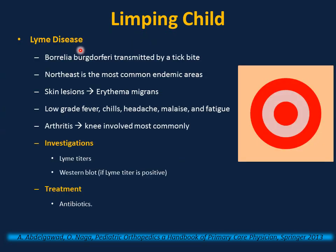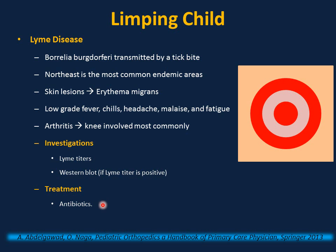Lyme disease can cause limping in children. It is caused by Borrelia burgdorferi and transmitted by a tick bite. The Northeast is the most common endemic area. The earliest manifestation is a target lesion or erythema migrans. If a child presents with erythema migrans, living in an endemic area with a history of tick bite or tick exposure, treat immediately with no delay and no investigations needed. Constitutional symptoms include low-grade fever, chills, headache, malaise, and fatigue or flu-like symptoms. Other manifestations include Bell's palsy, carditis, meningitis, and arthritis. If the diagnosis is not clear, order Lyme titers; if positive, confirm with Western blot. Treatment: antibiotics — doxycycline for children 8 years and above, amoxicillin for younger children. Severe cases such as meningitis must receive IV antibiotics, for example ceftriaxone.